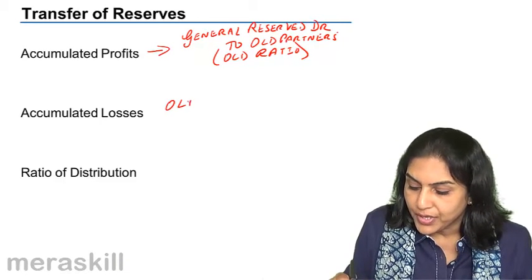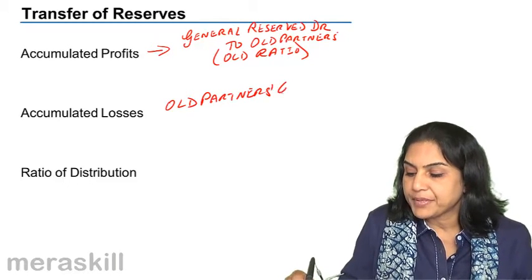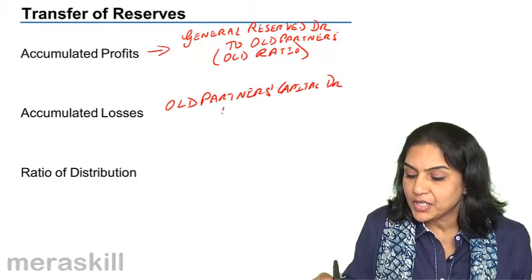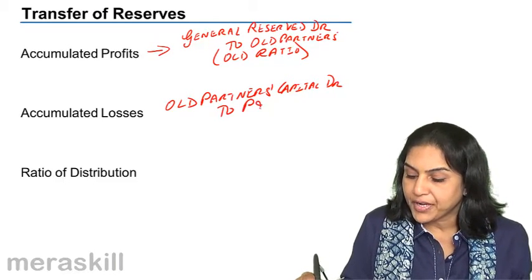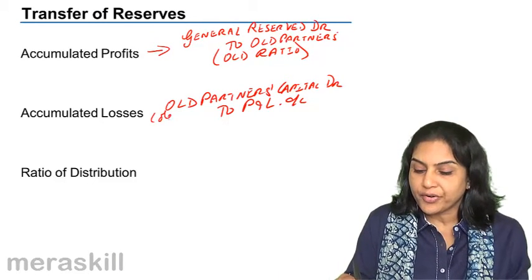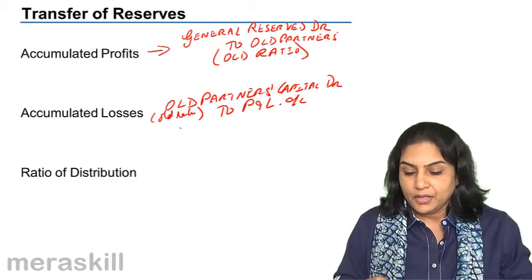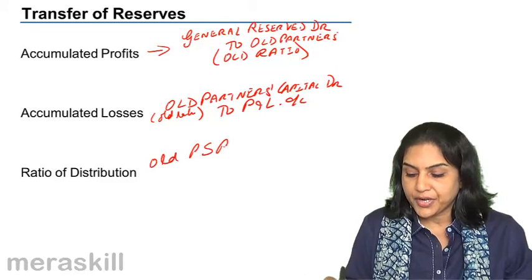So what do we do then? Old partners' capital accounts debit to profit and loss account. In what ratio? Old ratio. So this is always in the old profit sharing ratio.